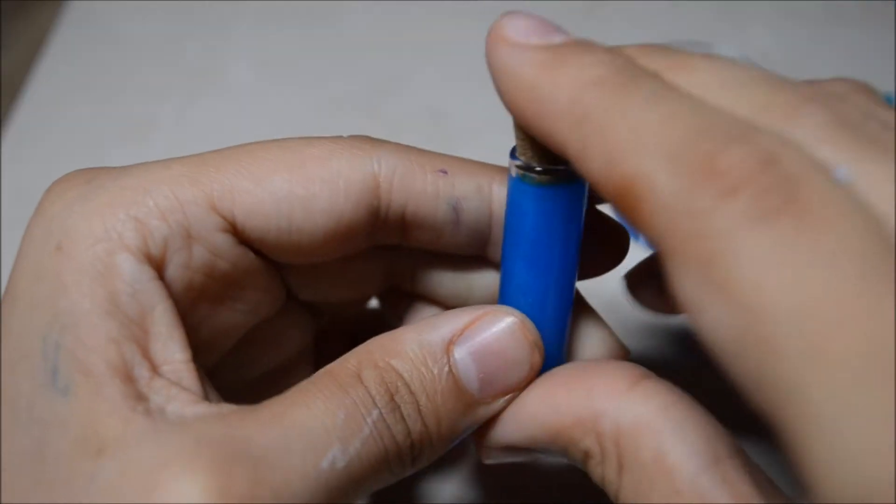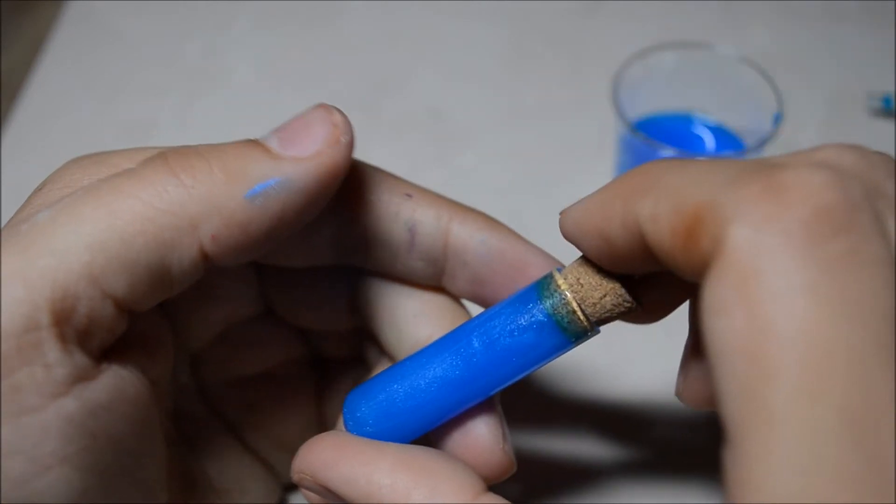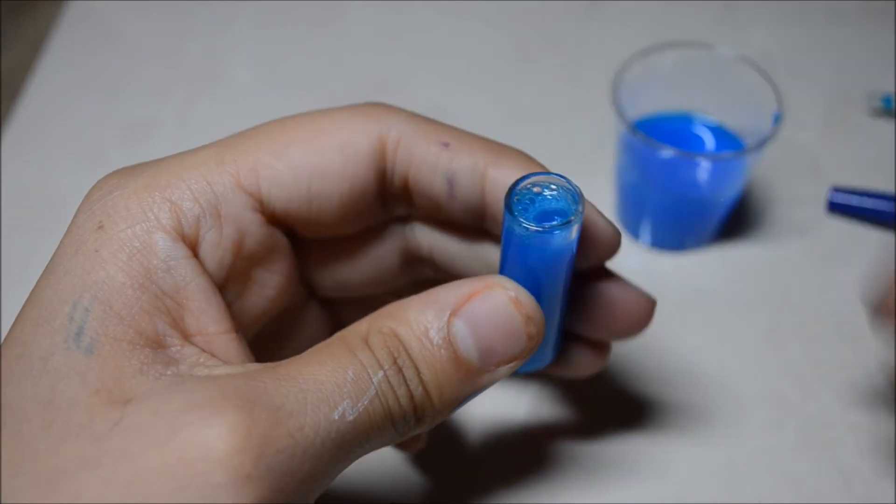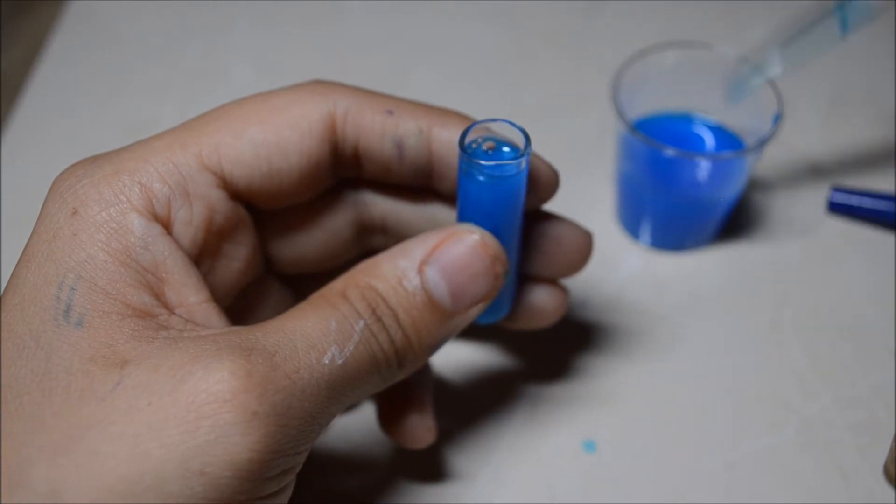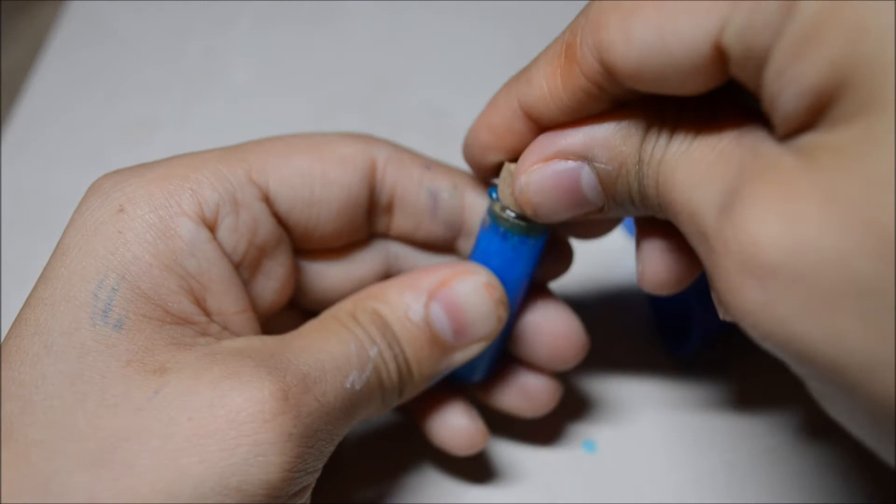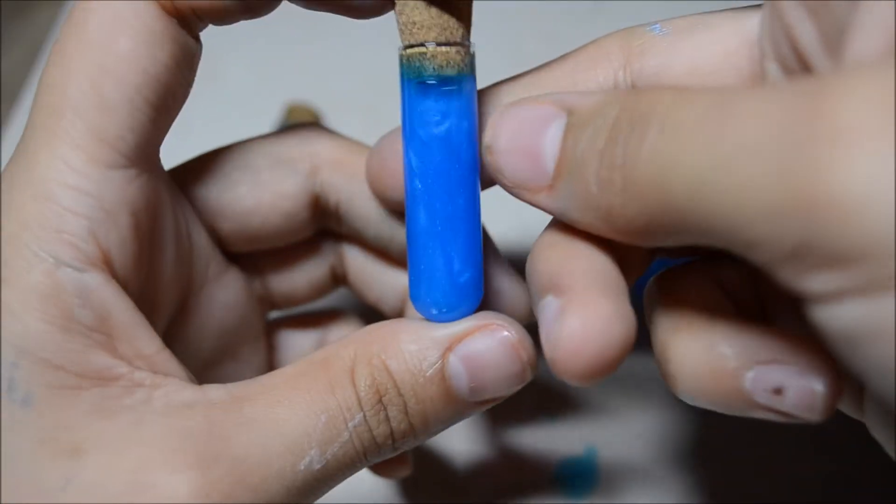Then just fill the vial - don't overfill it because you won't get an air bubble and it won't allow it to mix, so I took some out. Then you put the cork plug.